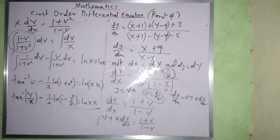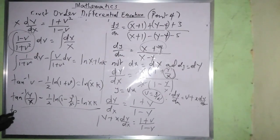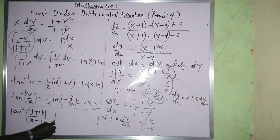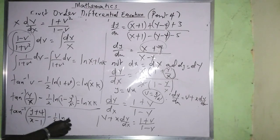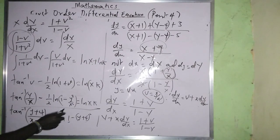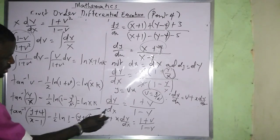Now substituting back X = x − 1 and Y = y + 4 to get the final answer. We have tan⁻¹((y + 4)/(x − 1)) minus (1/2)ln of [(x − 1)² + (y + 4)²] divided by (x − 1)² equals ln k. That is the final answer for case one.